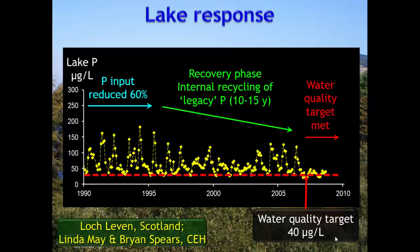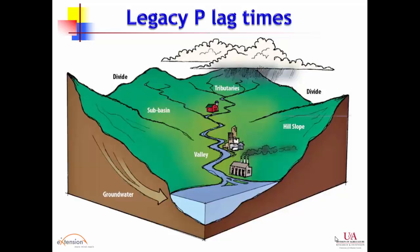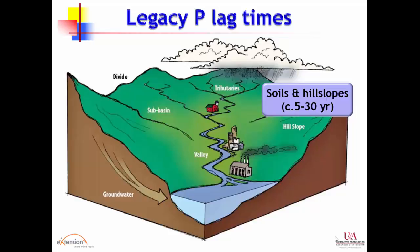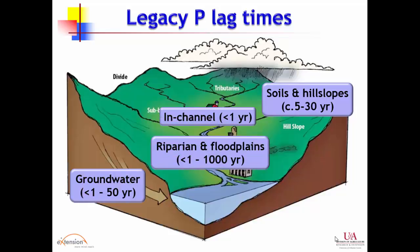The message for places like the Chesapeake Bay is that it will take time — especially where large amounts of legacy phosphorus are stored in the watershed and may be released slowly. Legacy times for hydrological transport vary enormously depending on setting: in karst systems in Arkansas, transport can be very rapid; in other systems it can take much longer for phosphorus to travel from where it's applied to where the impact is observed.